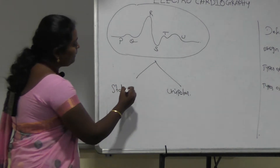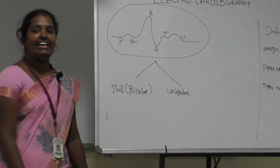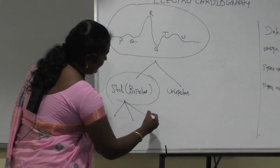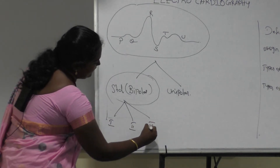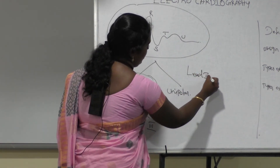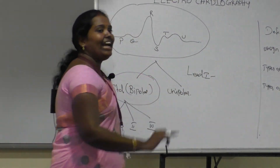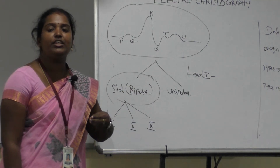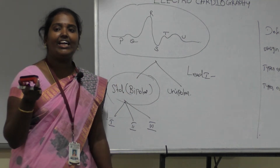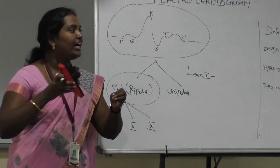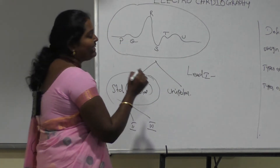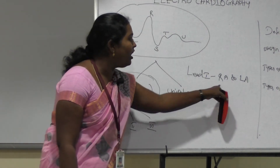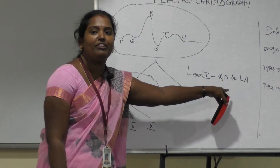The standard lead system is also called the bipolar lead system. We will now discuss only the standard lead system. It is classified into three types: Lead 1, Lead 2, and Lead 3. During the ECG process, different electrodes are placed on the human body — right arm, left arm, and left leg — with the right leg serving as the reference or ground point. For Lead 1, the electrode potential is measured between the right arm and the left arm.